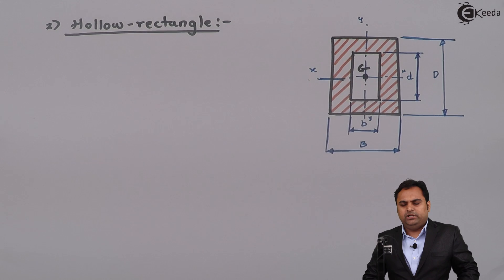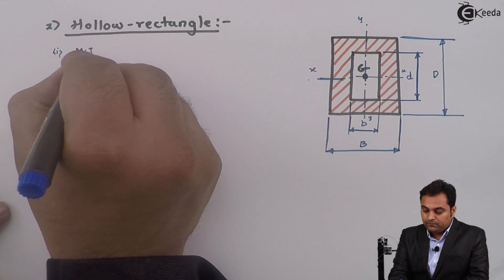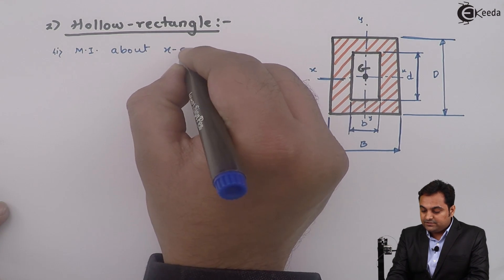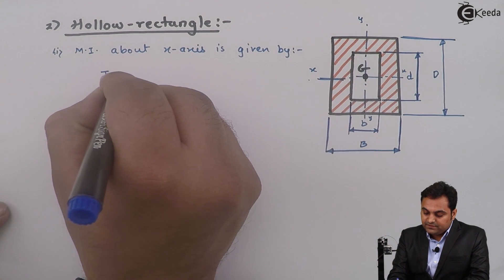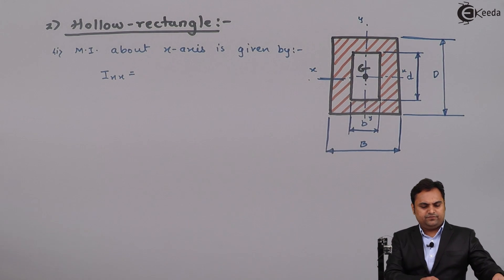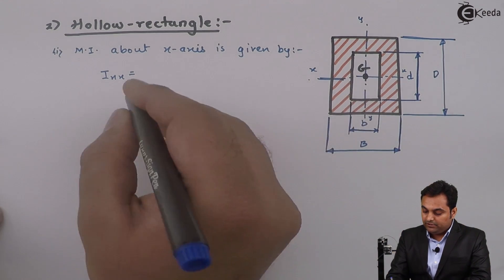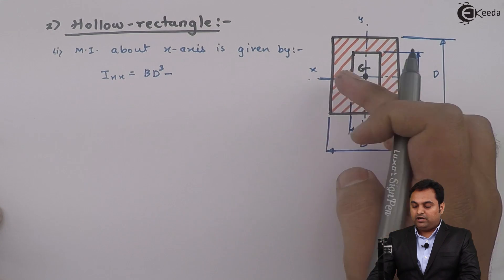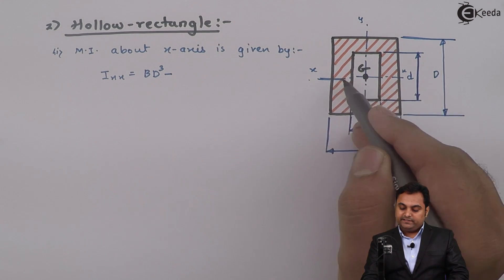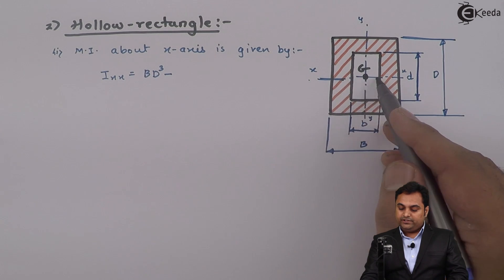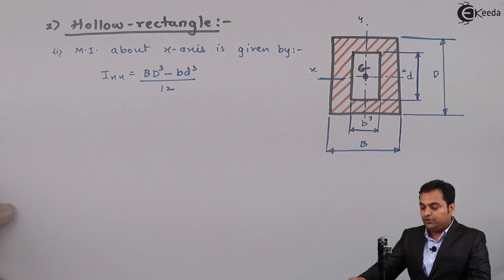Now I will write the moment of inertia formula at the centroid axes X and Y. For I_XX, as we saw for a solid rectangle it was BD³ by 12, so here for the hollow rectangle we have: I_XX is equal to capital B·D³ minus small b·d³, all divided by 12. We subtract the inner rectangle's moment of inertia from the outer rectangle's.